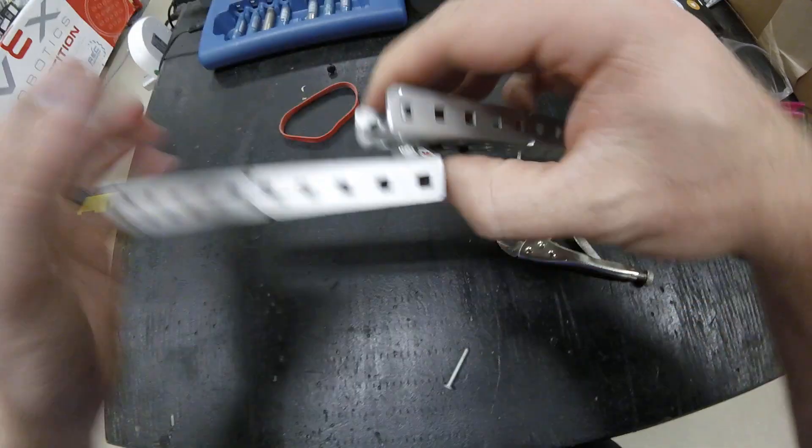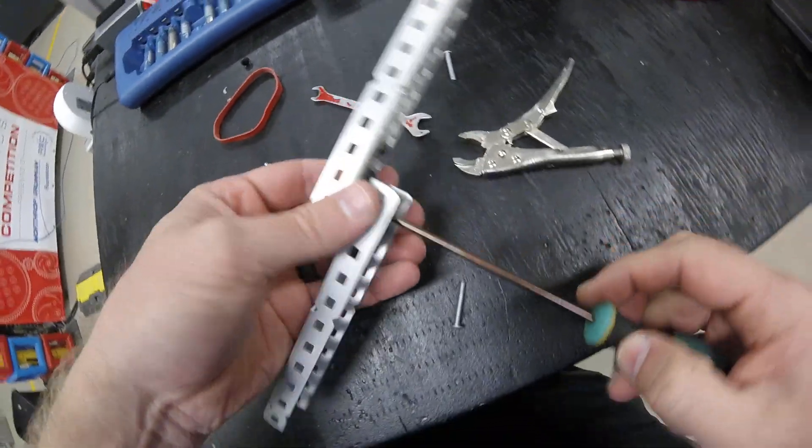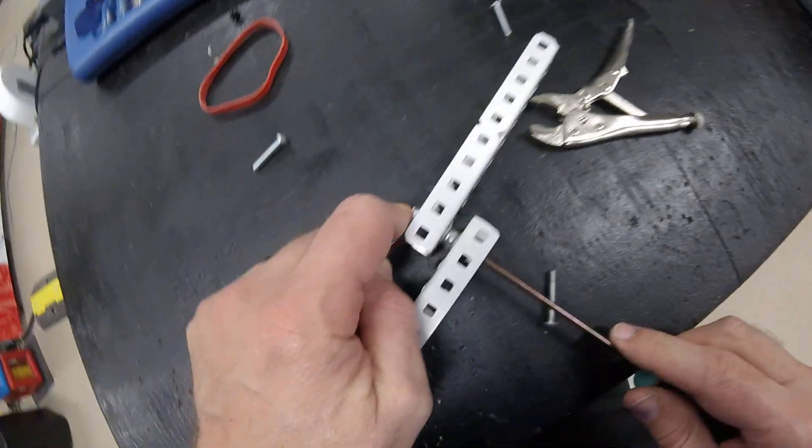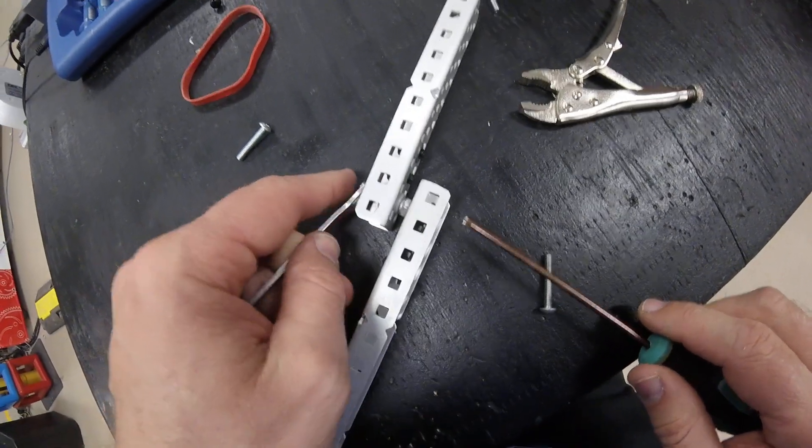So when we do this, you're going to notice that that center nut is going to spin, okay? And we're still going to be able to tighten that outside bolt.